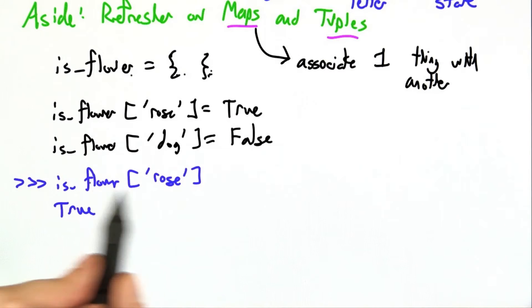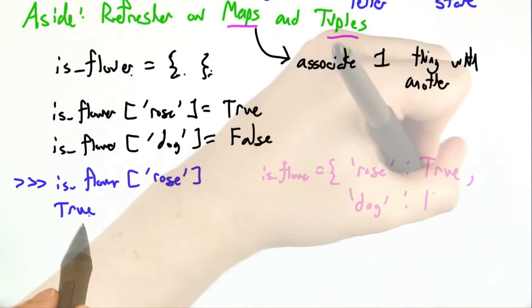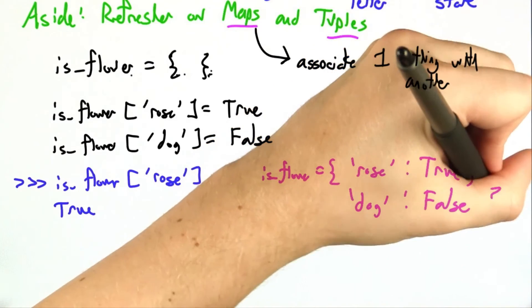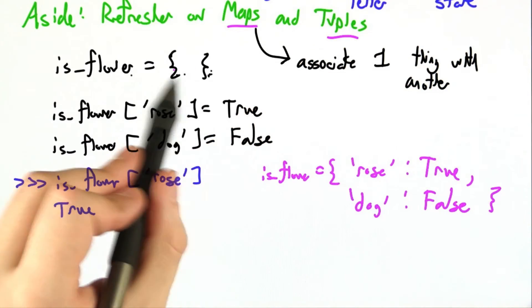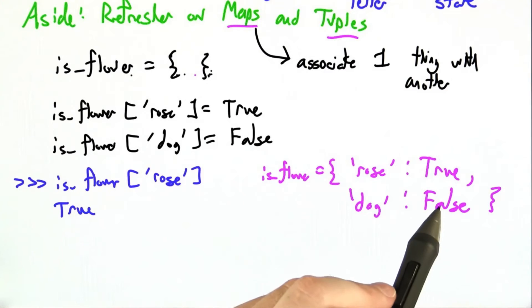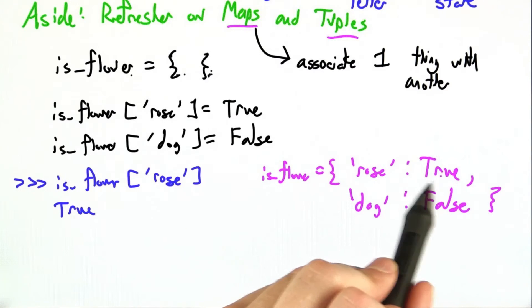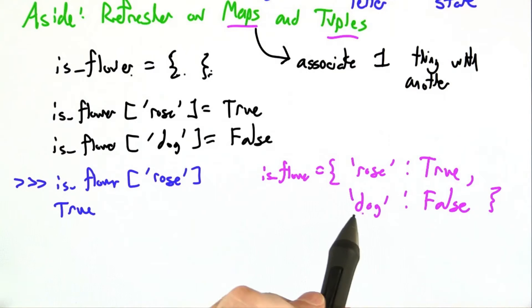And then if I go look it up later, is_flower of rose will return true. There's an alternative notation for specifying a map. Inside the curly braces you use to make a new map, you can actually just put all of the bindings. Rose maps to true, colon, dog maps to false. There's a colon in the center.